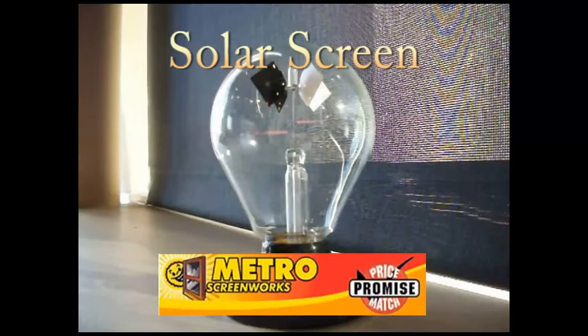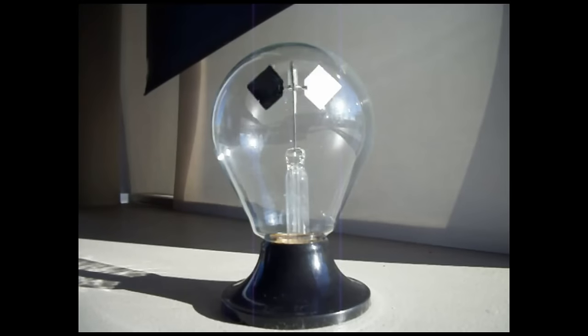A small experiment using our solar screen. This device is called a radiometer. The wheel spins when light hits it.